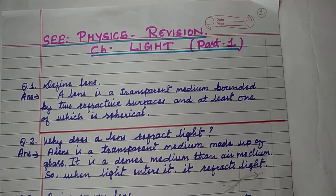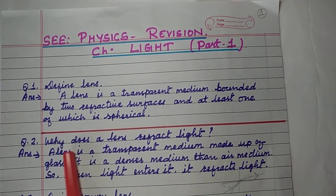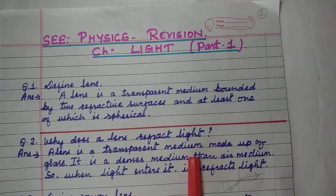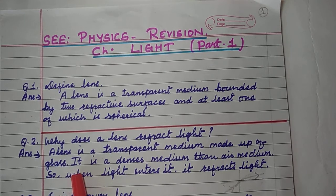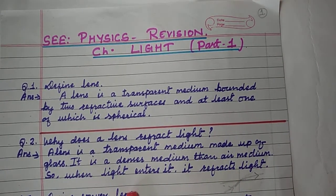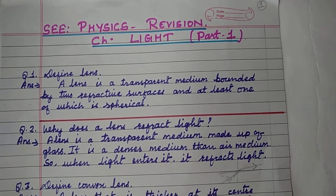Chapter Light. Question 1: Define Lens. A lens is a transparent medium bounded by two refractive surfaces, at least one of which is spherical. Question 2: Why does a lens refract light? A lens is a transparent medium made up of glass. It is a denser medium than air. So when light enters into it, it refracts — bending of light when it passes from one medium to another medium.